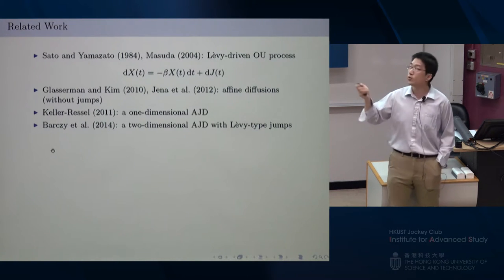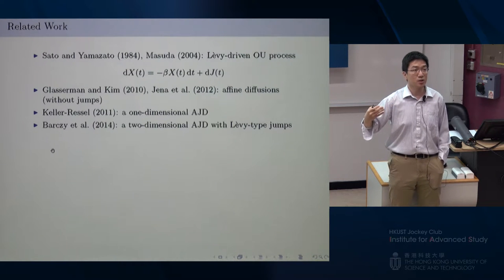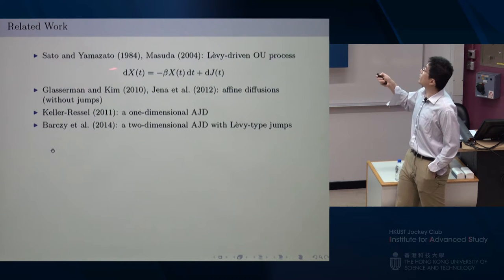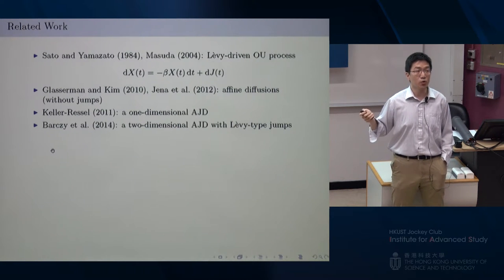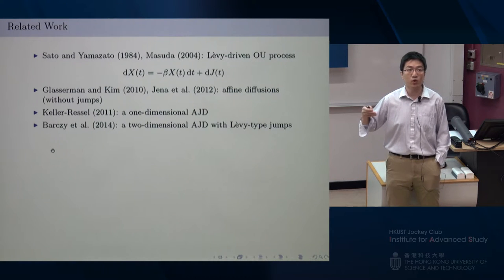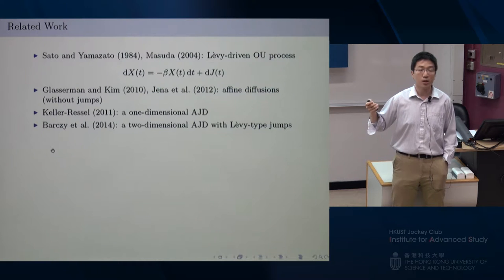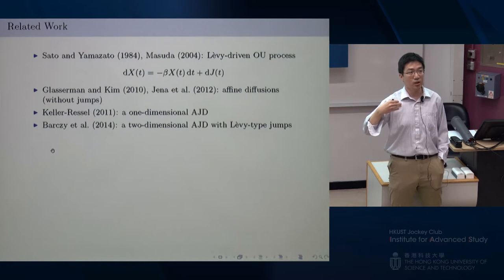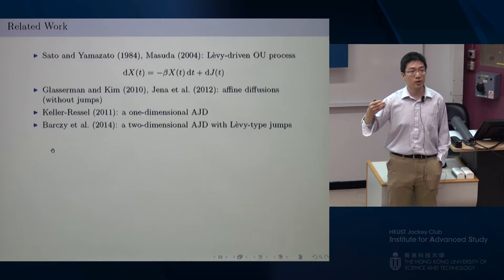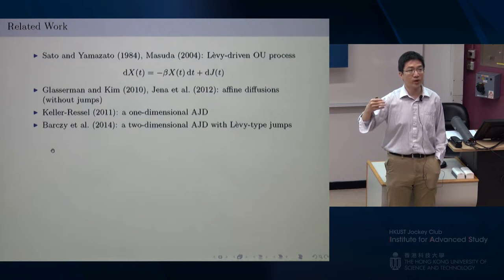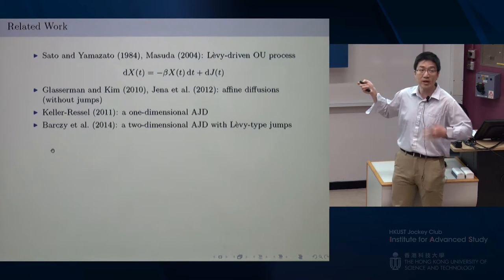If you go beyond that and consider a more general affine jump diffusion, you lose that closed-form Fourier transform. Two other papers study affine diffusions without jumps using the approach of analyzing the large-time asymptotics of the ODE system. However, using this approach you can only prove the existence of a stationary distribution, but you cannot prove how fast the process converges to stationarity.